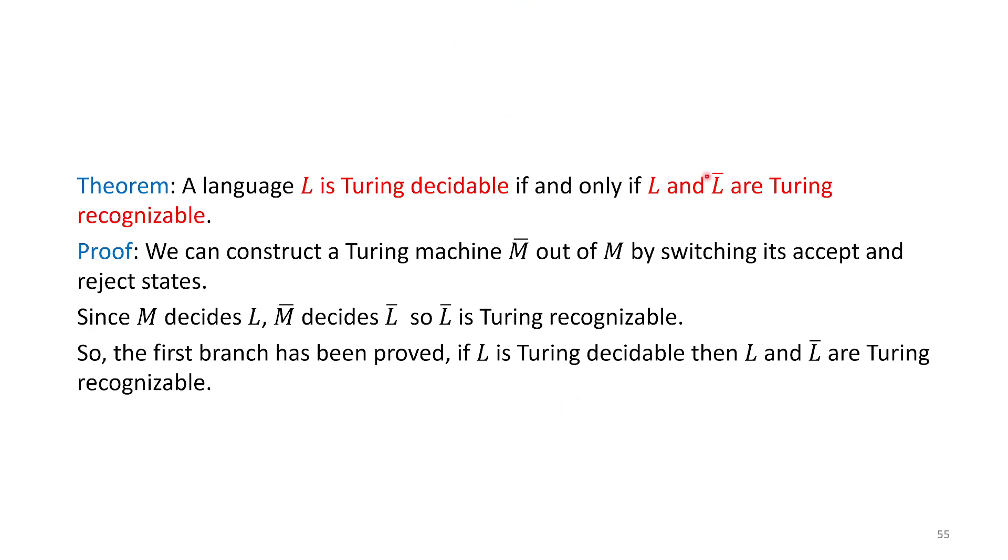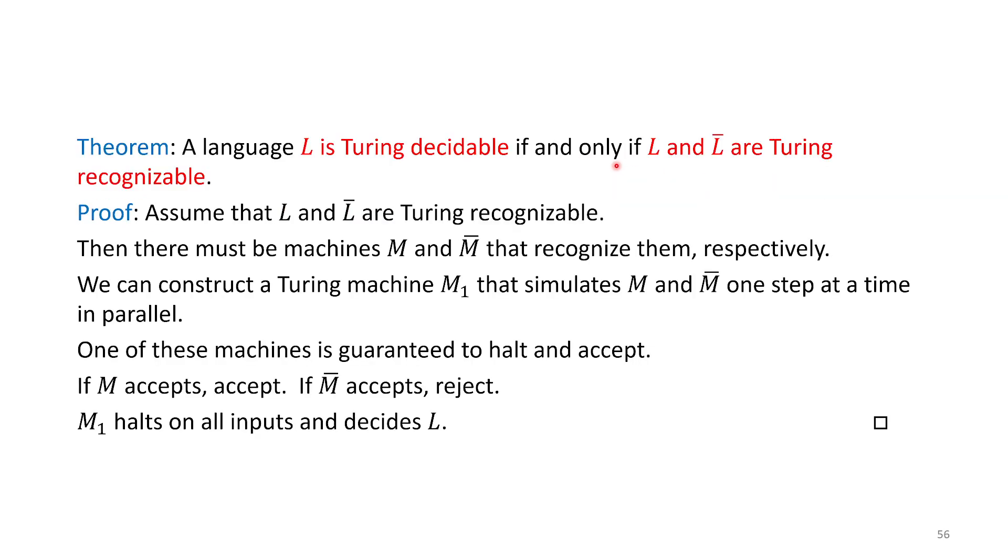So the first branch, if L is decidable then they both must be recognizable, is easier to prove. Let's go in the opposite direction. Now we're going to assume L and L̄ are Turing recognizable and build a machine that will decide L. We're going to take our two machines, M and M̄, that recognize these languages, and we're going to dovetail them. We're going to run them in parallel, each machine one step at a time. We're guaranteed, because these are both recognizable languages, either M or M̄ is going to halt. They're not guaranteed both to halt, but we're guaranteed one of them will always halt. One of these machines is guaranteed to halt and accept. We'll wait till whichever one does. If M accepts, we accept. If M̄ accepts, we reject. That means we can decide this language L.